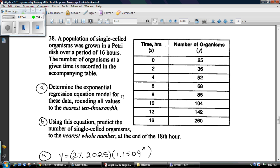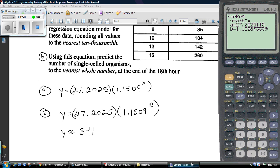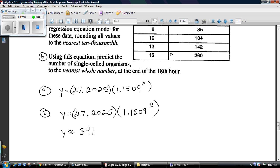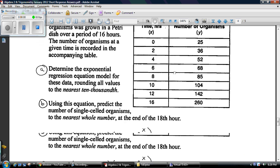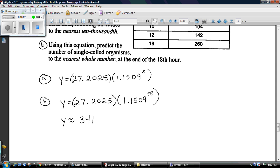There it is. And so all you do is write that down, write that down. Make sure you round to the nearest ten thousandths, ten thousandths. That's tens, hundreds, thousandths, ten thousandths. And then to the 18th hour, well, it tells you in the directions that x is hour, so all you do is plug 18 in for x itself.